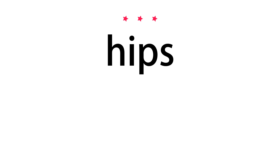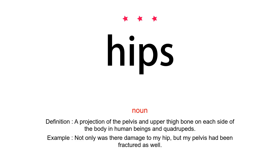Hips. Noun. Definition: a projection of the pelvis and upper thigh bone on each side of the body in human beings and quadrupeds. Example: not only was there damage to my hip, but my pelvis had been fractured as well.